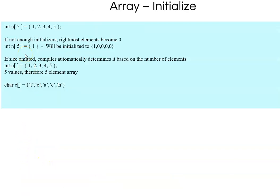Just as a normal variable can be initialized at declaration (e.g., int i = 3), an array can also be initialized during declaration: int n[5] = {1, 2, 3, 4, 5} sets n[0]=1, n[1]=2 ... n[4]=5. If you only give int n[5] = {1}, then n[0] becomes 1 and the remaining elements automatically become 0. You can also omit the size — int n[] = {1,2,3,4,5} — and the compiler counts the 5 elements and allocates 20 bytes.